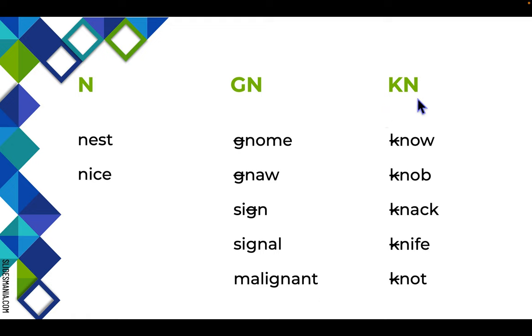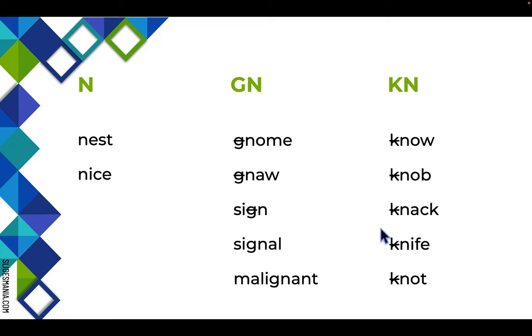When you have K and N together, the K is silent, like in 'know,' 'knob,' 'knack,' 'knife,' and 'knot.' Notice that these are all used at the beginning of a word.